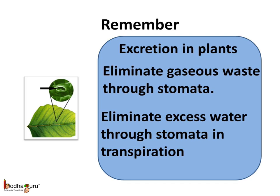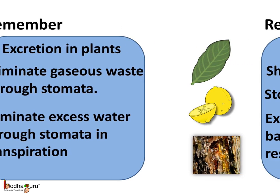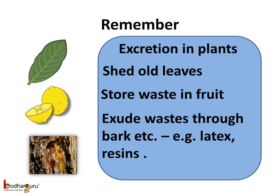To sum up what we learnt today — how do plants excrete waste? They eliminate the gaseous waste, that is carbon dioxide and the by-product of photosynthesis which is oxygen, through the stomata. They also eliminate the excess water through stomata in the transpiration process. Plants shed their old leaves, and few store the waste in the fruit. They also exude waste through the bark.